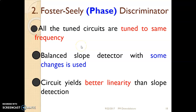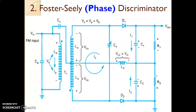The circuit diagram of the Foster-Seeley discriminator is similar to that of the balanced slope detector except for some changes, and we also get the advantage of better linearity than slope detection in the Foster-Seeley discriminator.